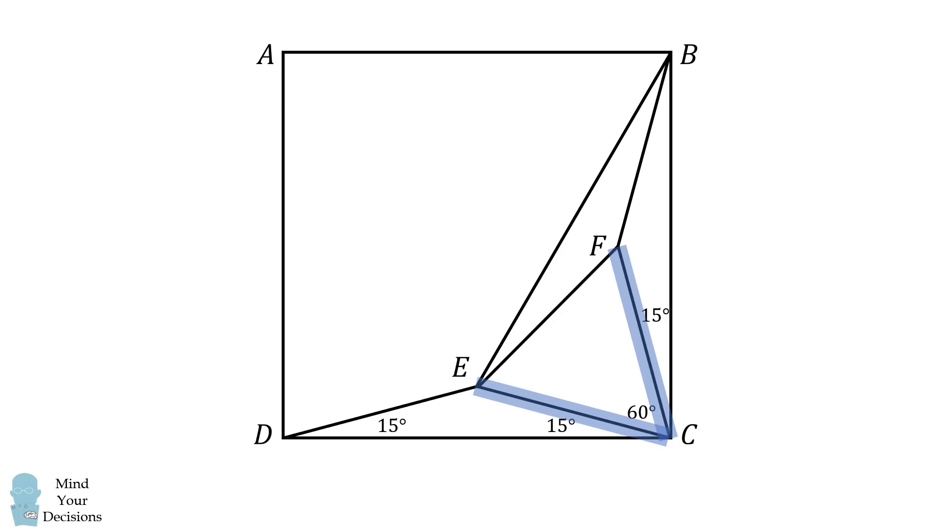This means the other two angles will both be equal to 60 degrees as well. Therefore, triangle EFC is an equilateral triangle, and EF is also equal to EC and FC.